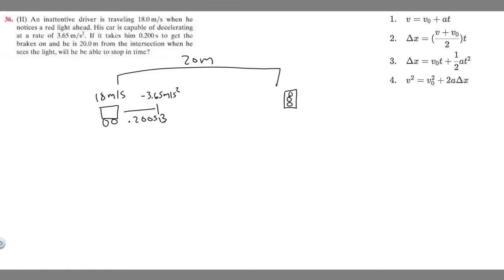In this problem, an inattentive driver is traveling 18 meters per second when he notices a red light ahead. His car is capable of decelerating at a rate of 3.65 meters per second squared. It takes him 0.2 seconds to get the brakes on, and he is 20 meters from the intersection when he sees the light. Will he be able to stop in time?